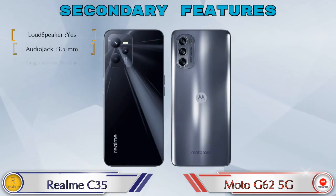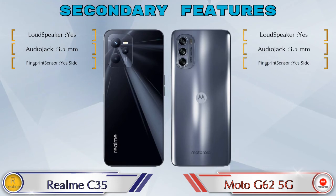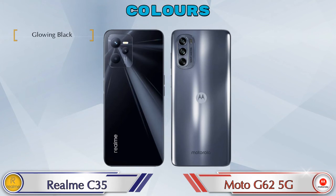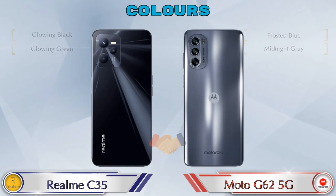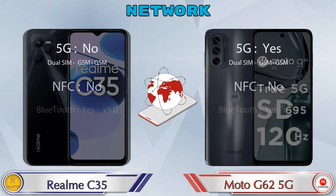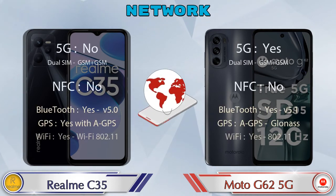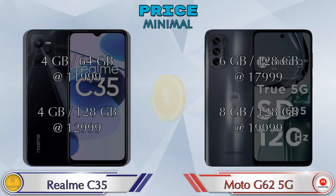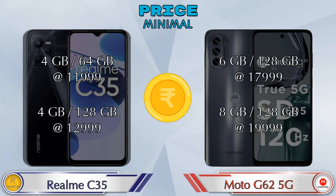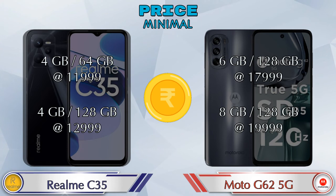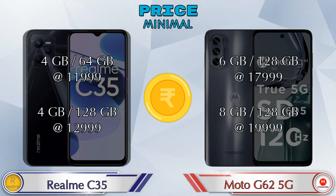Let's see the secondary features of both phones. Two color options are available in both phones. Let's see the details about network, Bluetooth, GPS, and Wi-Fi. The Realme Narzo 35 comes in two variants: 4GB RAM + 64GB storage at ₹11,999 and 4GB RAM + 128GB storage at ₹12,999. The Moto G62 5G comes in 6GB RAM + 128GB storage at ₹17,999 and 8GB RAM + 128GB storage at ₹19,999.